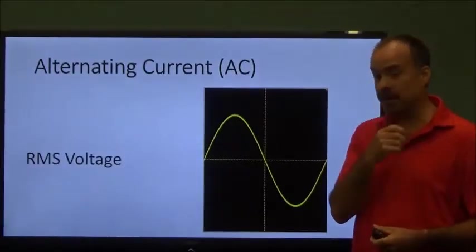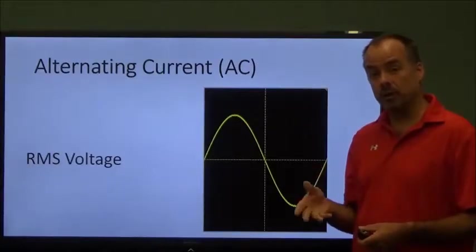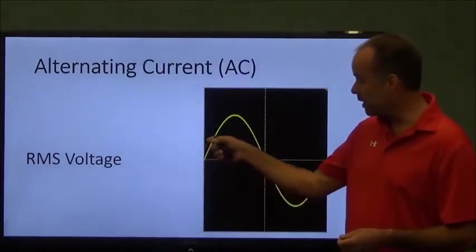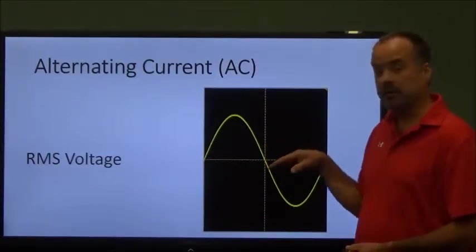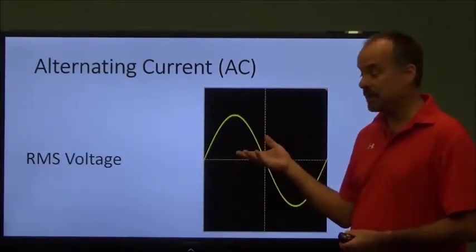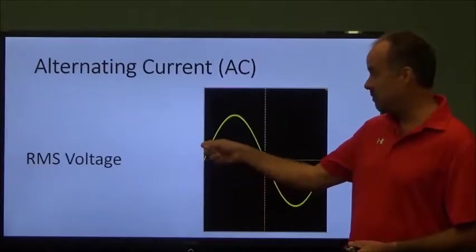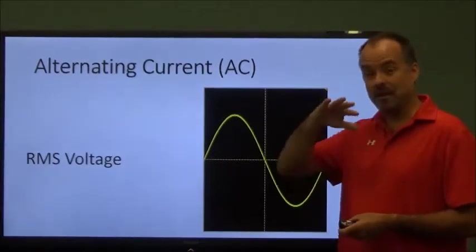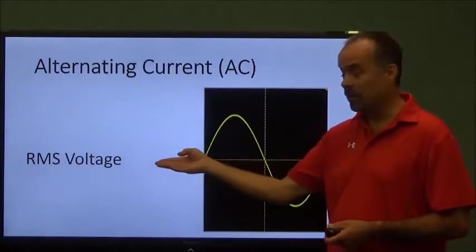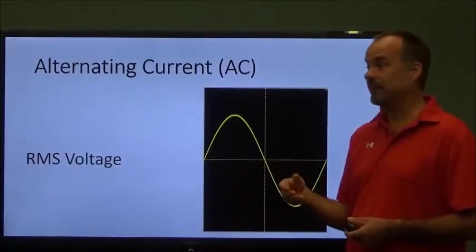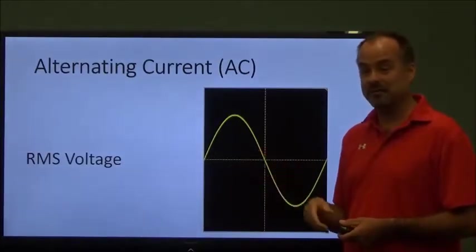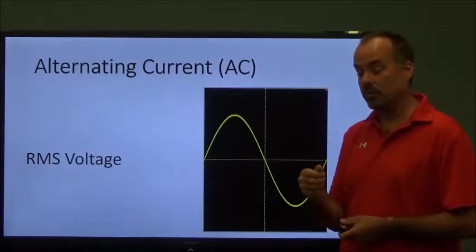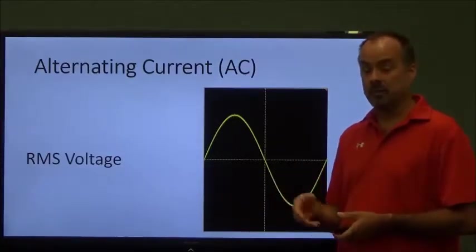The next thing we want to talk about is RMS voltage or root-mean-squared voltage. What this is, is if you look at an AC wave, you know, DC, we just had a straight line across here and the power never changed. It never diminished. Well, in an AC circuit, you can see that the power peaks and then it goes past zero and then it peaks again and goes past zero. I'm never at a constant voltage. What my RMS voltage is, you can consider it like an AC equivalent voltage of a DC signal. I know that sounds kind of confusing.